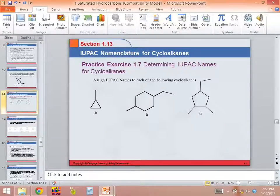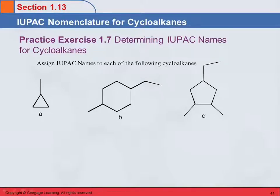Let's do a practice exercise on naming cycloalkanes. Looking at structure A, the first thing we need to do is look at the circle — the cyclic part of the compound. How many points does it have? How many carbons? Three. So that is cyclopropane.